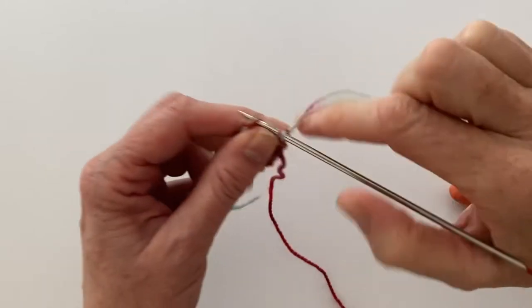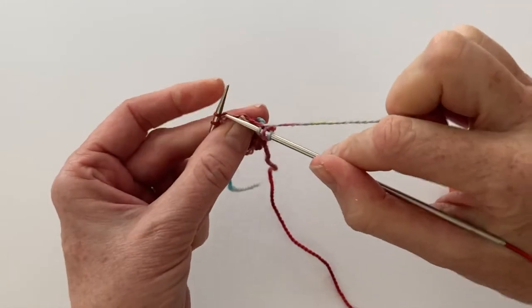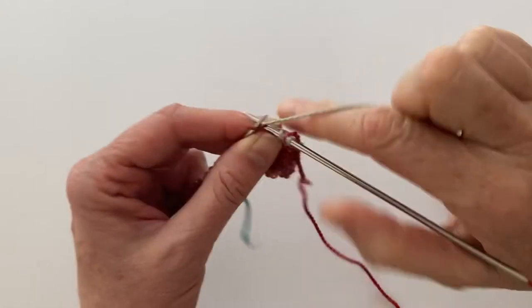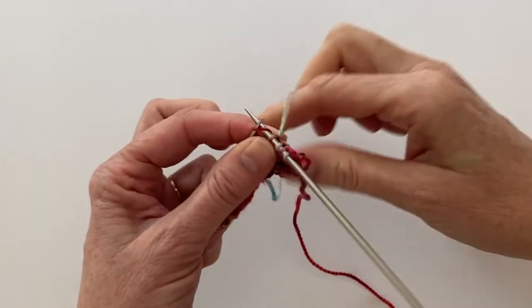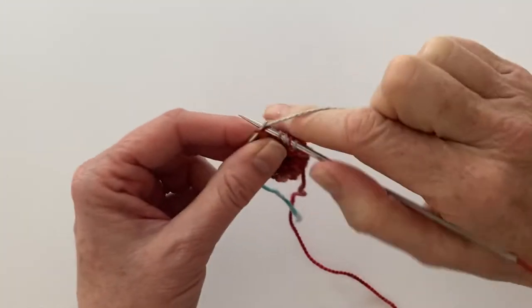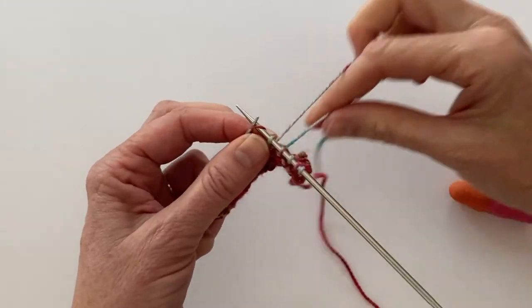You can see it's going to happen again there. Just keep wrapping the tail over the working yarn, a few more stitches.